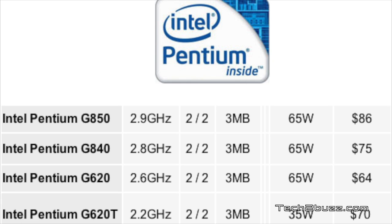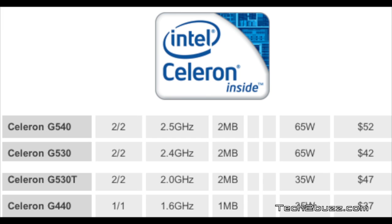To differentiate the G800 from the G600: in the G800 chips, DDR3 memory support goes up to 1333MHz, while in the G600 series it's only up to 1066MHz. If you're looking at these chips, I suggest the G840 or the G620 — those make the most sense. The G620T is an interesting chip; notice its TDP is just 35 watts, so if you're building a home theater PC or a low-power PC, look at this chip.